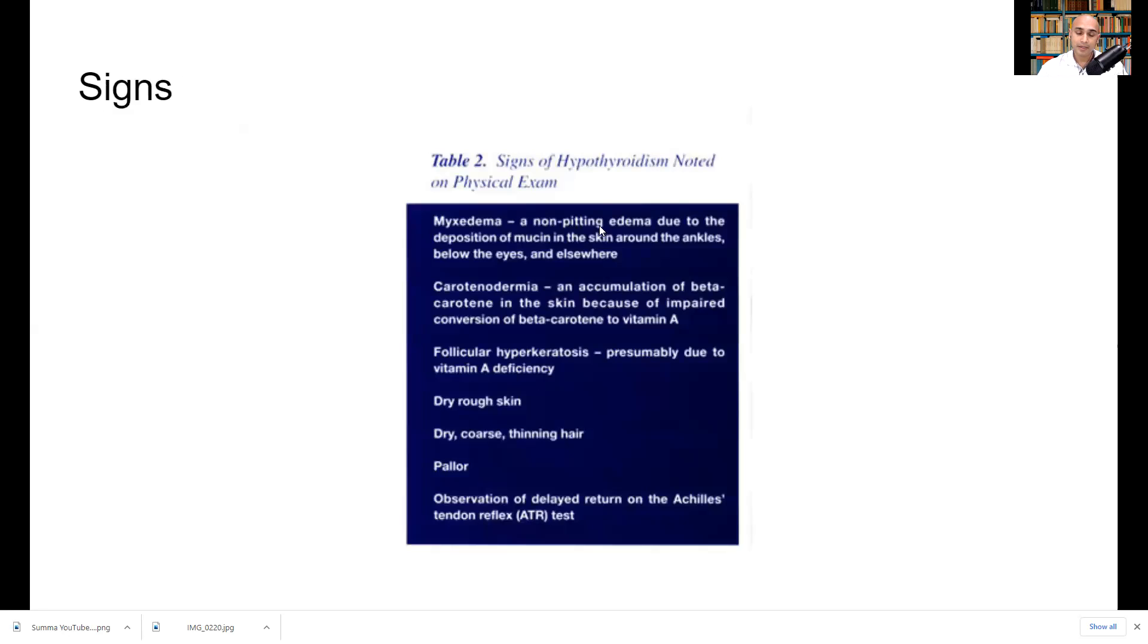What about physical signs? Well, one of the most common signs is myxedema, which is just kind of this swelling that's most commonly seen around patients' eyes and their ankles. And it's pretty obvious. And I have some pictures to indicate that. Keratinoderma, and that's kind of where you get an accumulation of beta carotene in the skin and you kind of get this orange discoloration of your palms and the soles of your feet. You see it in vegetarians and vegans a lot because they eat a lot of carrots, but you can also see it in patients who have hypothyroidism or poor thyroid function.